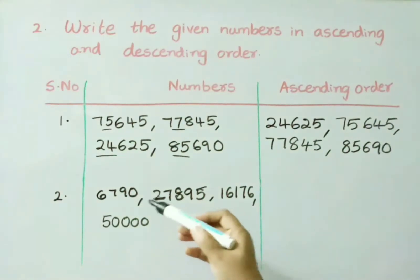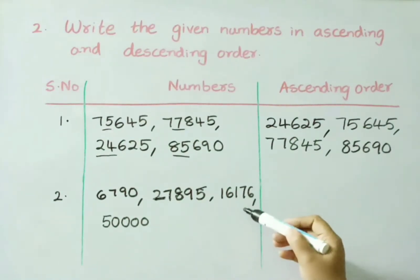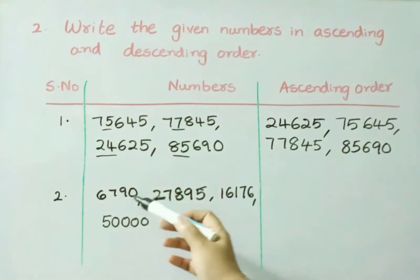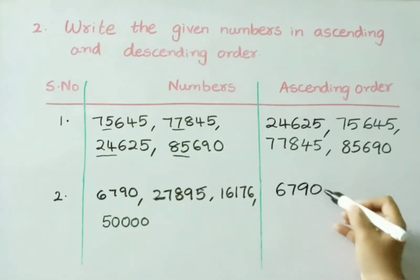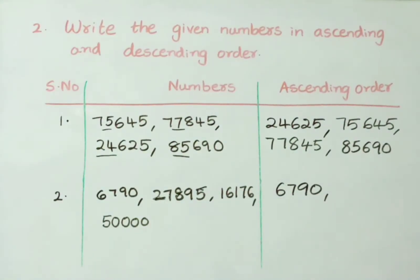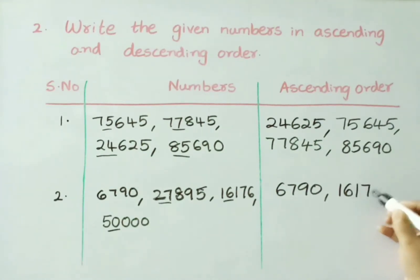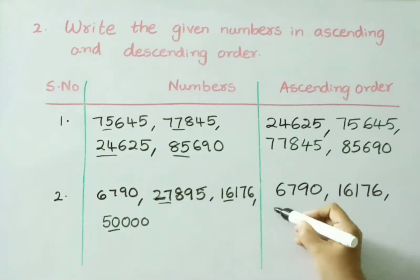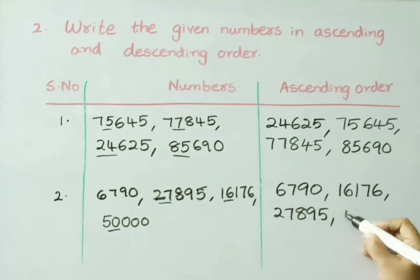See the second sum: 6,790; 27,895; 16,176 and 50,000. Here, a 4-digit number is present, so that is the smallest value. Write 6,790. The remaining 3 numbers are 5-digit numbers. Let us check the first 2 digits: 27,000; 16,000 and 50,000. So, 16,000 value is smallest — write 16,176. Next, 2 numbers left: 27,000 is smallest — write 27,895. And finally, last value is 50,000.